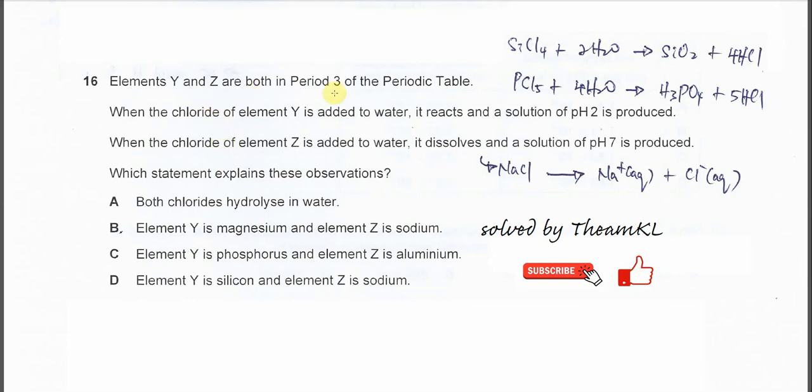Elements Y and Z are both in Period 3 of the Periodic Table. Period 3 elements are sodium, magnesium, aluminium, silicon, phosphorus, sulfur, and chlorine, of course, argon.